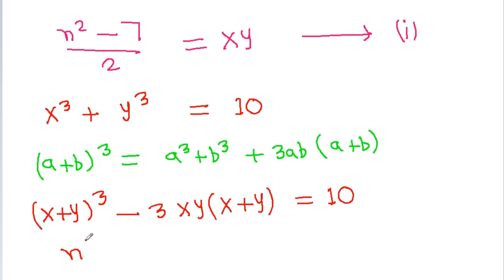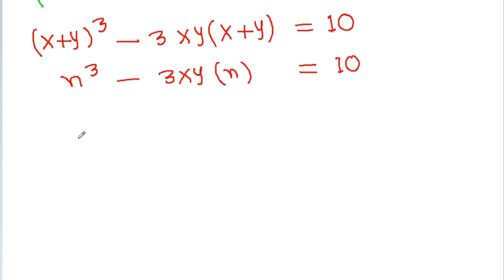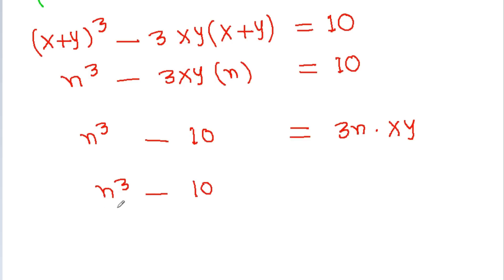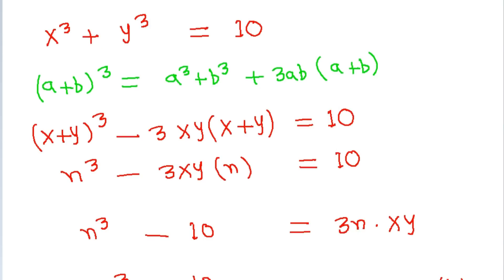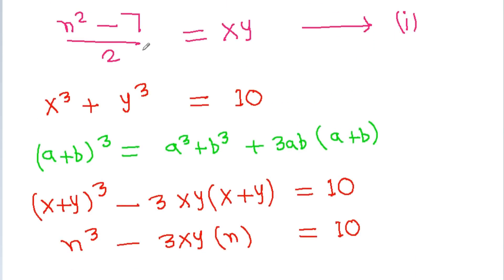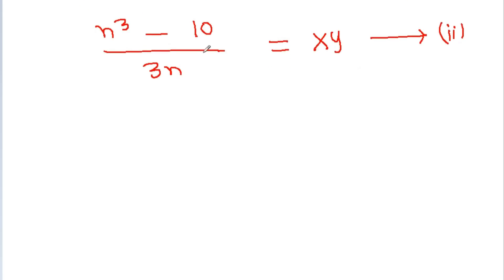With x plus y equal to n, we get n cubed minus 3xy times n equals 10. So n cubed minus 10 equals 3n times xy, giving us xy equals (n cubed minus 10) divided by 3n. Suppose this is equation 2. Equation 1 gives xy equals (n squared minus 7) divided by 2, and equation 2 gives xy equals (n cubed minus 10) divided by 3n.